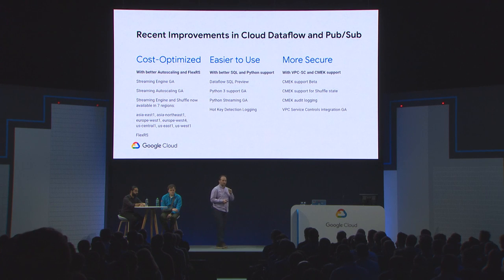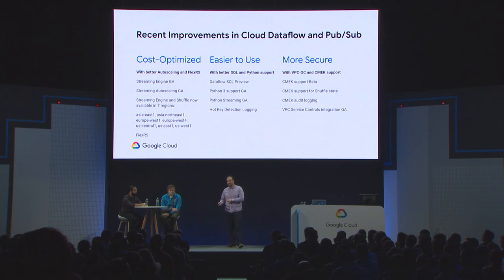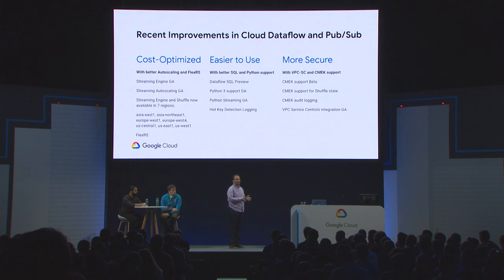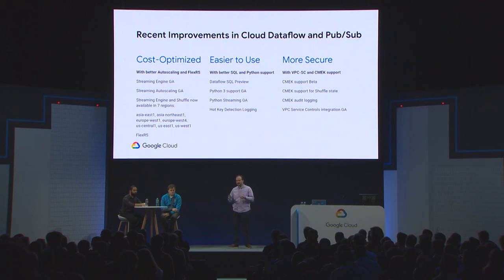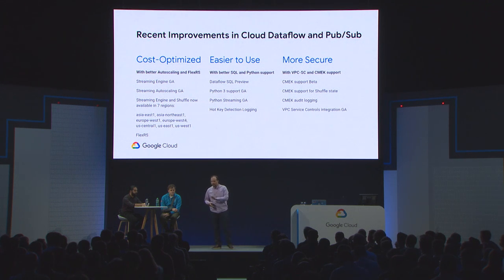On the security side, I'll highlight two features: VPC Service Controls (VPC SC) and Customer Managed Encryption Keys (CMEK). CMEK allows you to use your own keys to encrypt the state of your pipeline. Without your own keys, your pipeline state will still be encrypted using Google-managed encryption keys — everything in Cloud Dataflow is encrypted once it touches disk. But with CMEK, you have the additional control that the keys are yours.